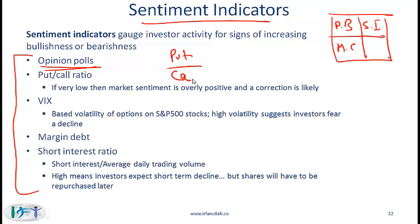The put/call ratio is another sentiment indicator. People buy puts when they expect the market to go down and call options when they expect it to go up. If this ratio is very low, the denominator — call options — is high, meaning the market is extremely bullish. Contrarian investors would see this as an overbought situation and take an opposite position by selling.